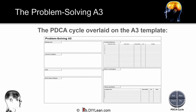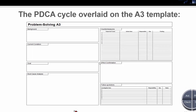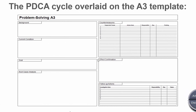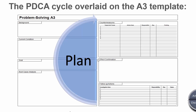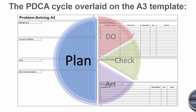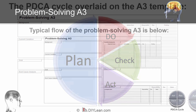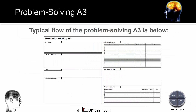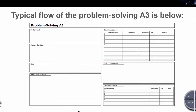Here we see a blank A3 template that is commonly used for problem solving. The left side of the A3 corresponds to the first step in the Plan, Do, Check, Act process. The right side covers the other three steps: Do, Check, and Act. The flow of the A3 follows the PDCA process steps.